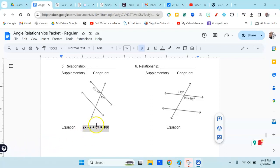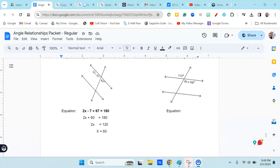So to solve this equation, I'm going to simplify by combining like terms, and that's going to give me 2x plus 60 equals 180, and then I'm going to solve that equation. When I solve it, I subtract 60 from both sides, then divide by 2, and I get x equals 60.